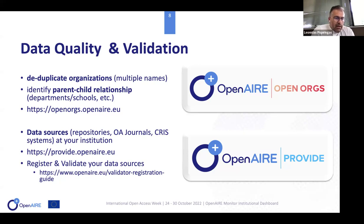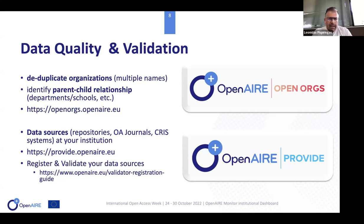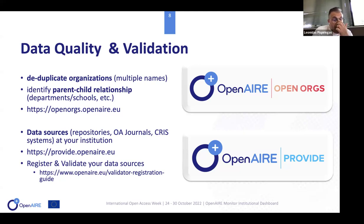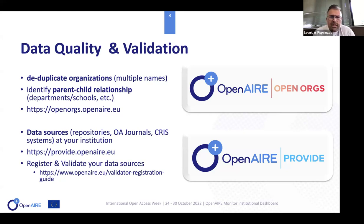The second part of data quality is ensuring Open Air has as much metadata as possible from your integrated data sources — repositories, open access journals, and CRIS systems at your institution. This can be accomplished through the Open Air Provide dashboard, where you can register and validate these data sources so Open Air can aggregate research products from them. You need to comply with Open Air guidelines for further details. We can discuss this after the presentation or after the call.